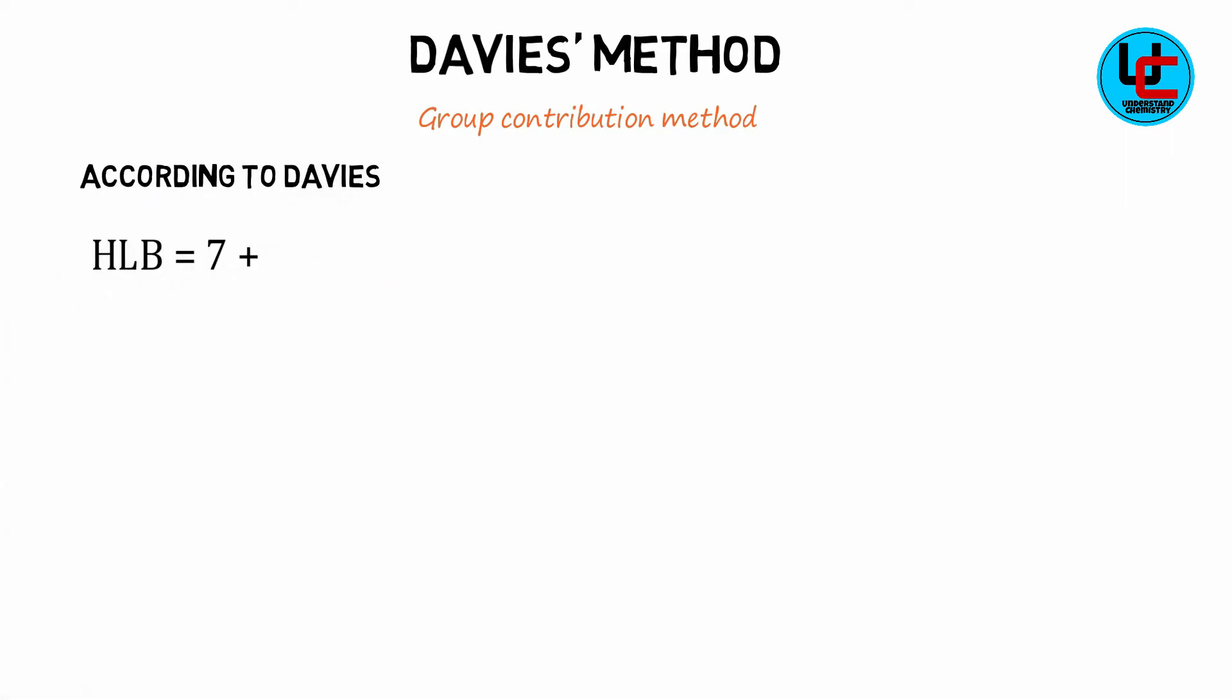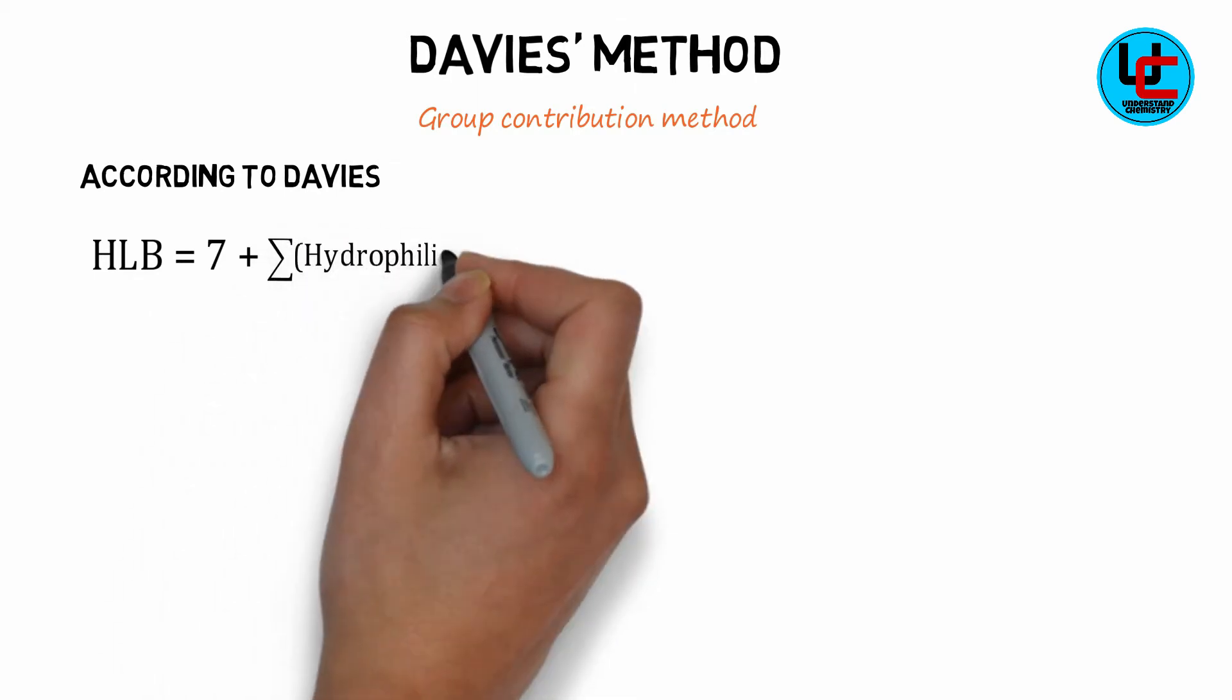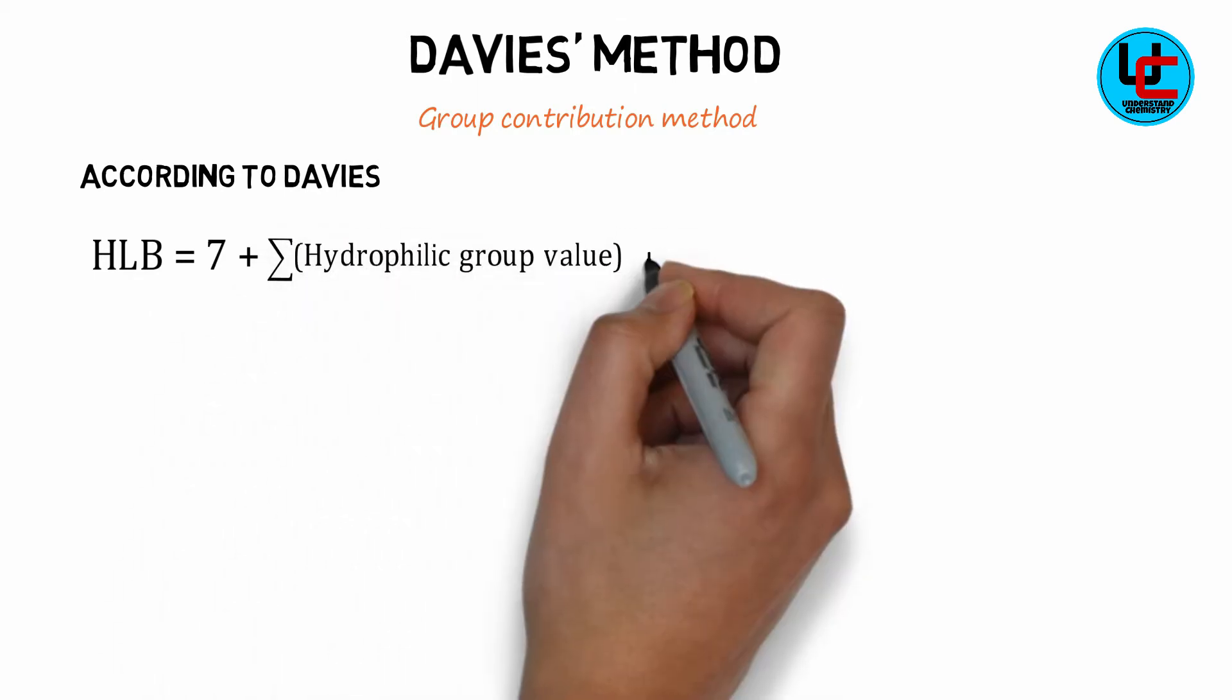Therefore, a new method was introduced by Davies. In his formula for calculating HLB, he has taken into account the contribution of chemical groups. According to Davies, HLB is equal to 7 plus sum of all hydrophilic group values plus sum of all lipophilic group values.